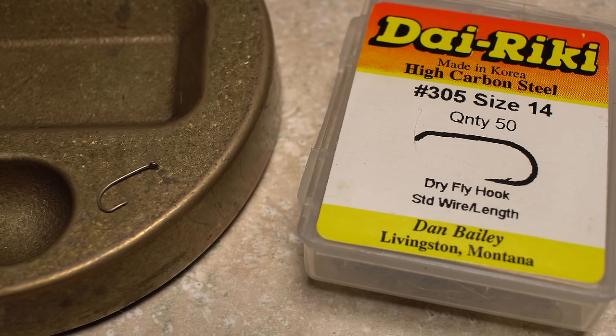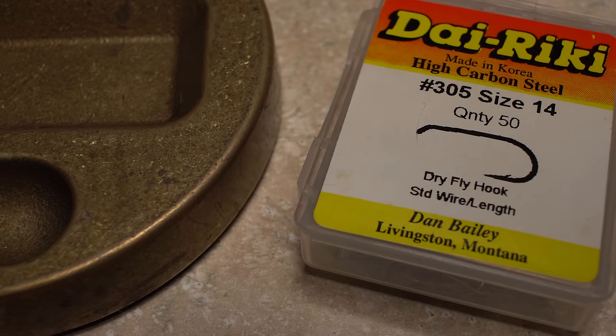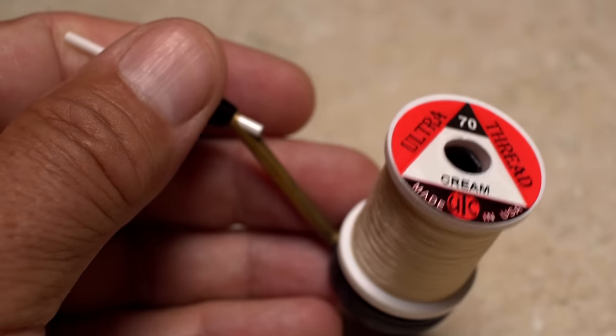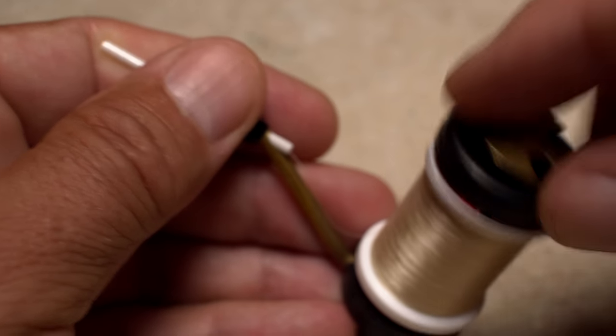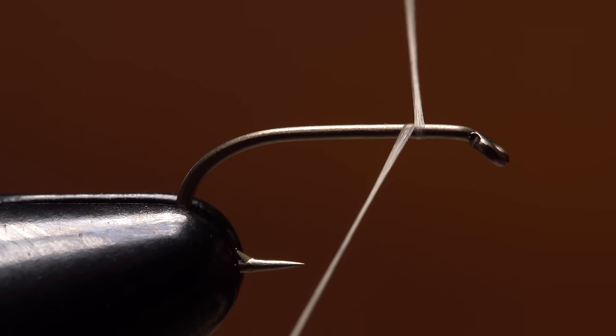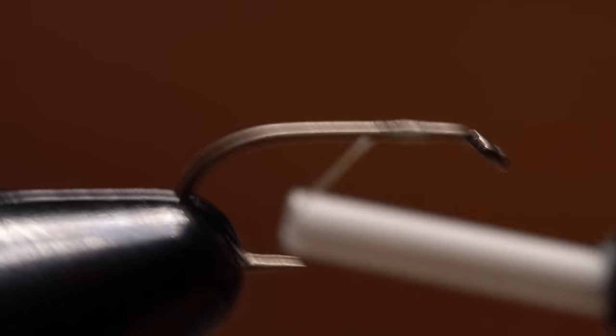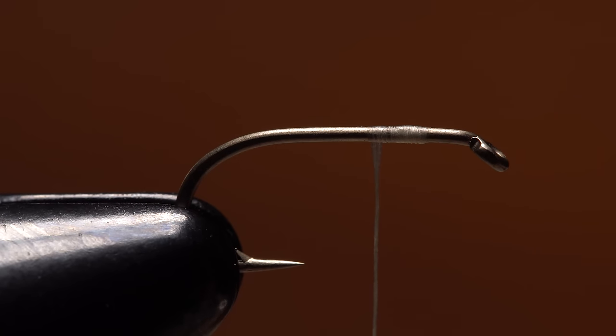For a hook, I prefer something with a fairly short shank like a Dairiki number 305 in size 14. After getting the hook firmly secured in the jaws of your tying vise, load a bobbin with a spool of cream colored thread, here UTC 70 denier. Start your thread on the hook shank leaving a very full eye length space behind the eye and take a few wraps rearward before snipping or breaking off the tag.